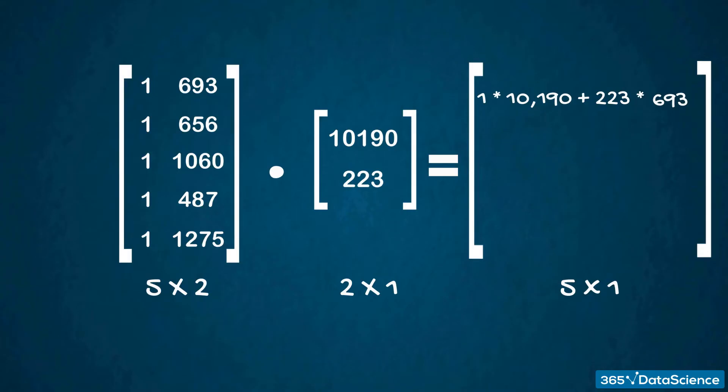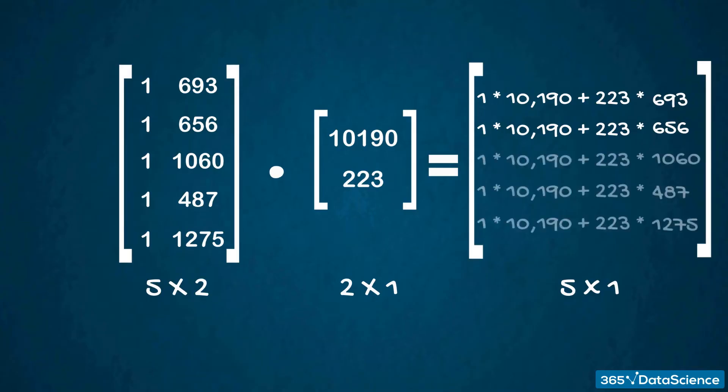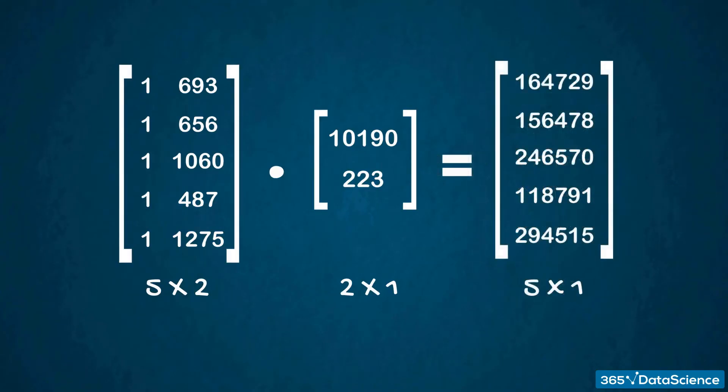The second, 1 times 10,190 plus 656 times 223, and so on. By inspecting these expressions, we quickly realize that the resulting vector contains all the manual calculations we made earlier to find the prices. In machine learning and linear regressions in particular, this is exactly how algorithms work.